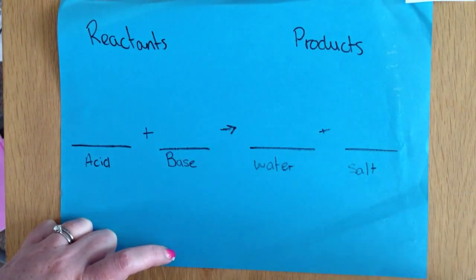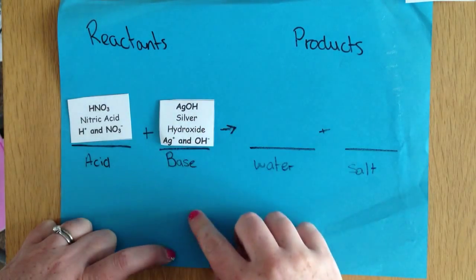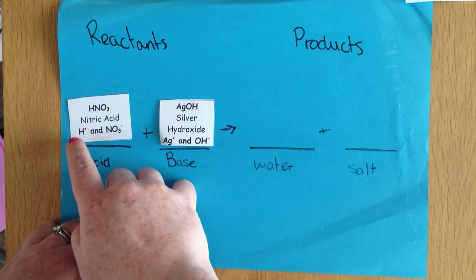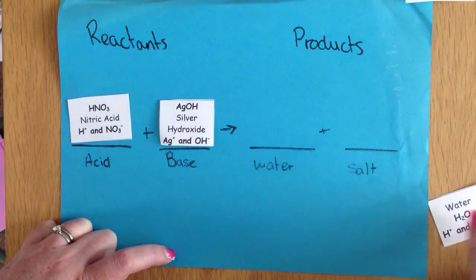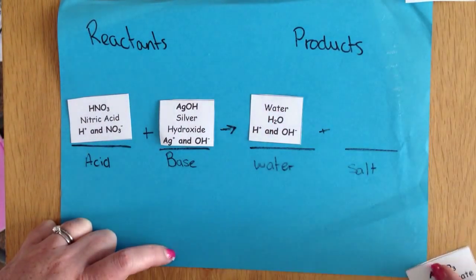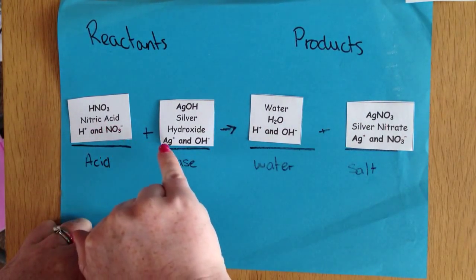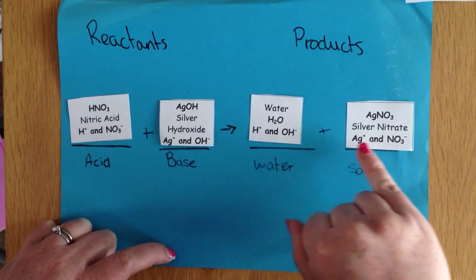Moving on to nitric acid and silver hydroxide. Again our hydrogen ion and our hydroxide ion here. Pop those together and we are going to get water. If we take what we have left over, we have the nitrate ion and the silver ion. We are going to get silver nitrate.